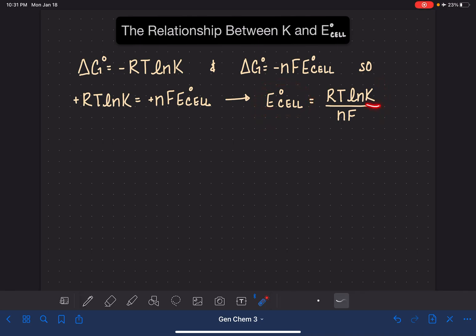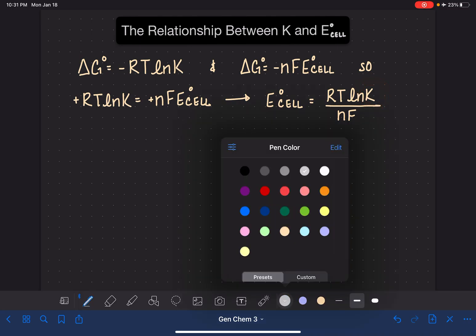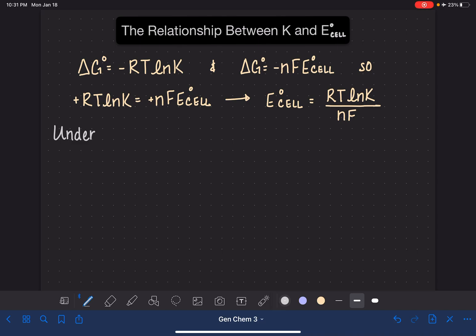a relationship between E cell and the value of the equilibrium constant. When we are dealing with standard conditions, which is ideal, so when we are under standard conditions, remember standard conditions dictate things like the temperature, 25 degrees C, which is a variable here. When we are under standard conditions and our temperature is 25 degrees C,